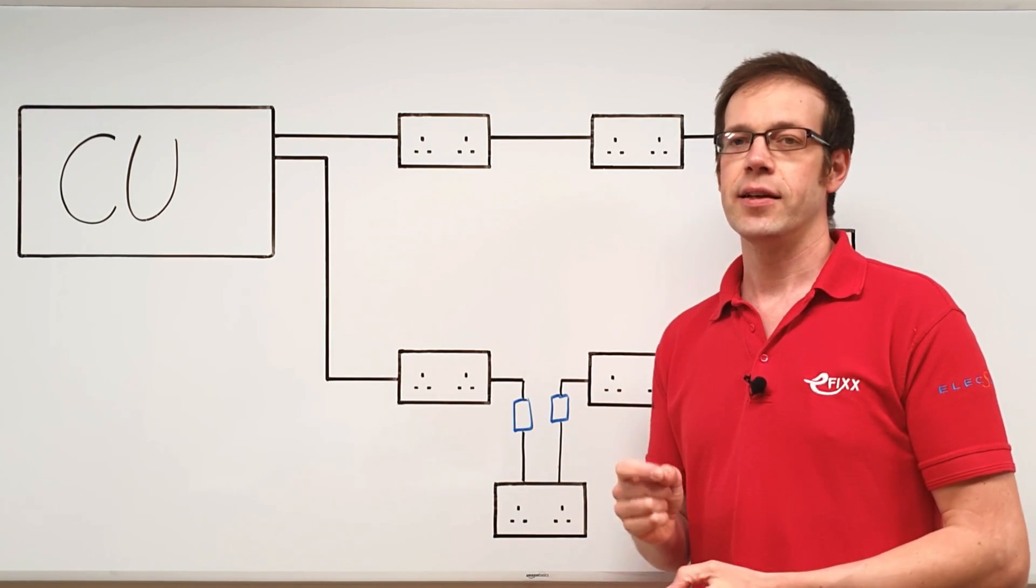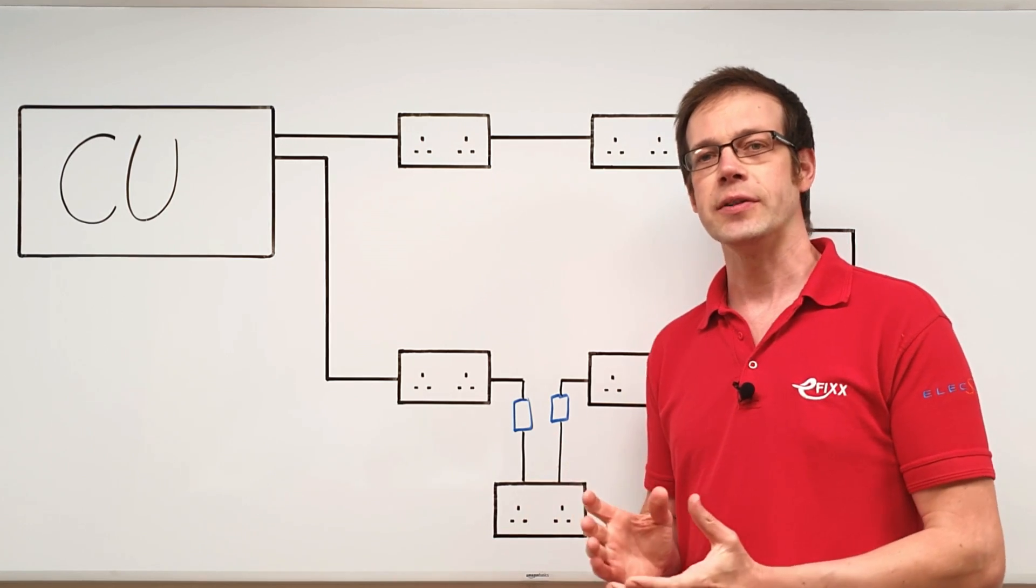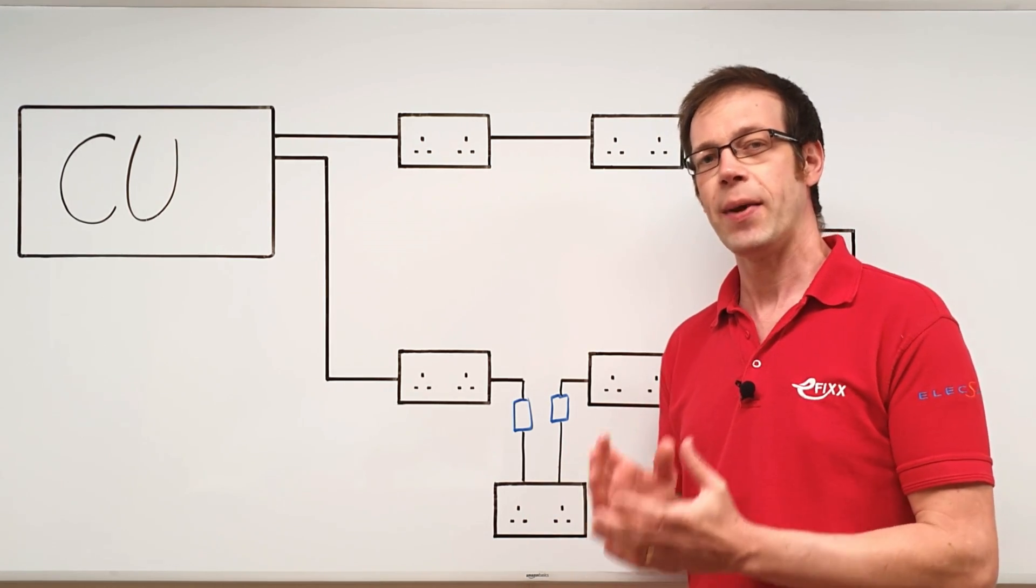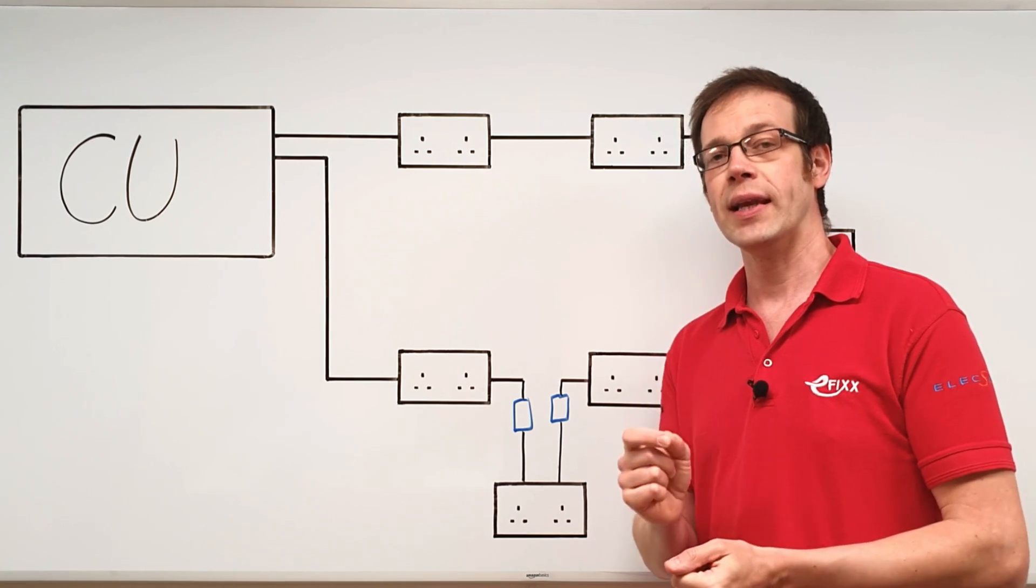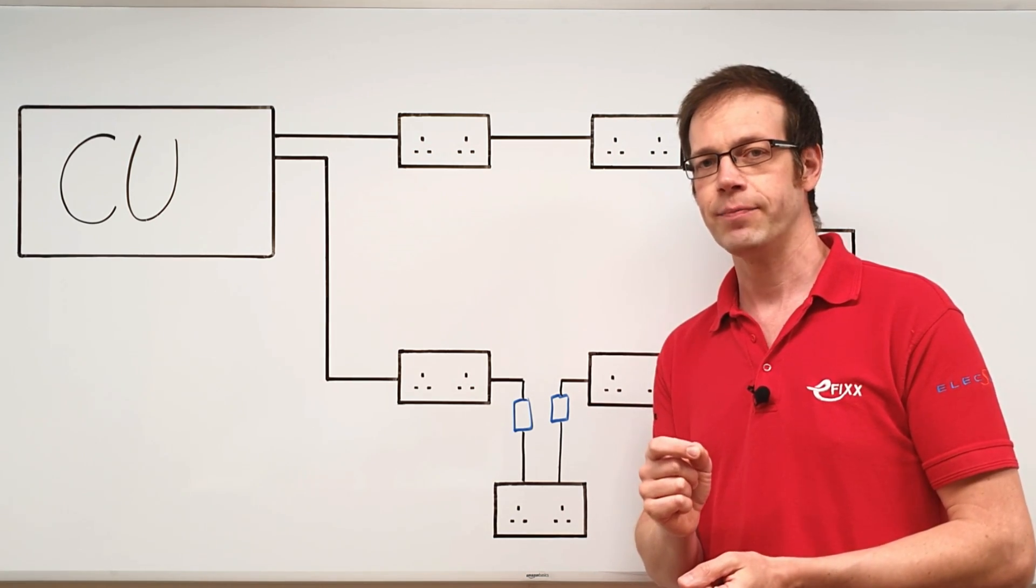Well, we can find a couple of clues to the answer to whether this is acceptable or not in BS 7671 Appendix 15, because in Appendix 15 we see the arrangements for ring and radial final circuits.